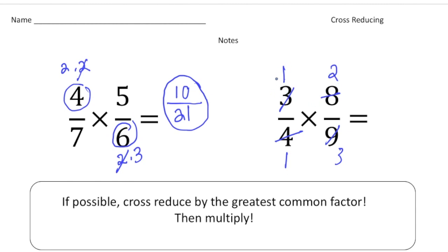Now that things are reduced, I can just multiply the numerators. 1 times 2 is 2. And multiply the denominators. 1 times 3 is 3. Our final answer or our product is 2/3. Anytime you're multiplying fractions, see if you can cross reduce. It makes things a lot easier.